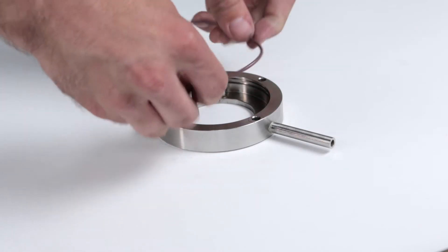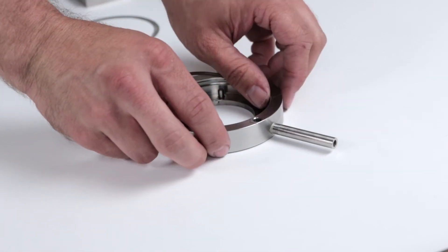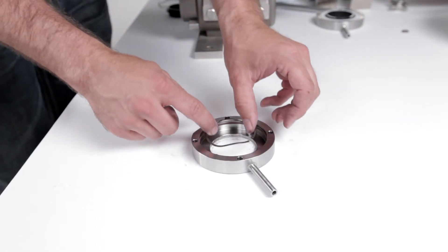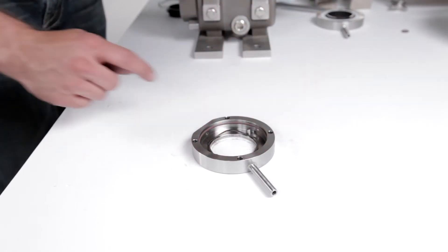Slightly stretch the new flush seal o-ring. Fit it into the groove inside the seal housing. Place the inner and outer seal springs into the seal housing.